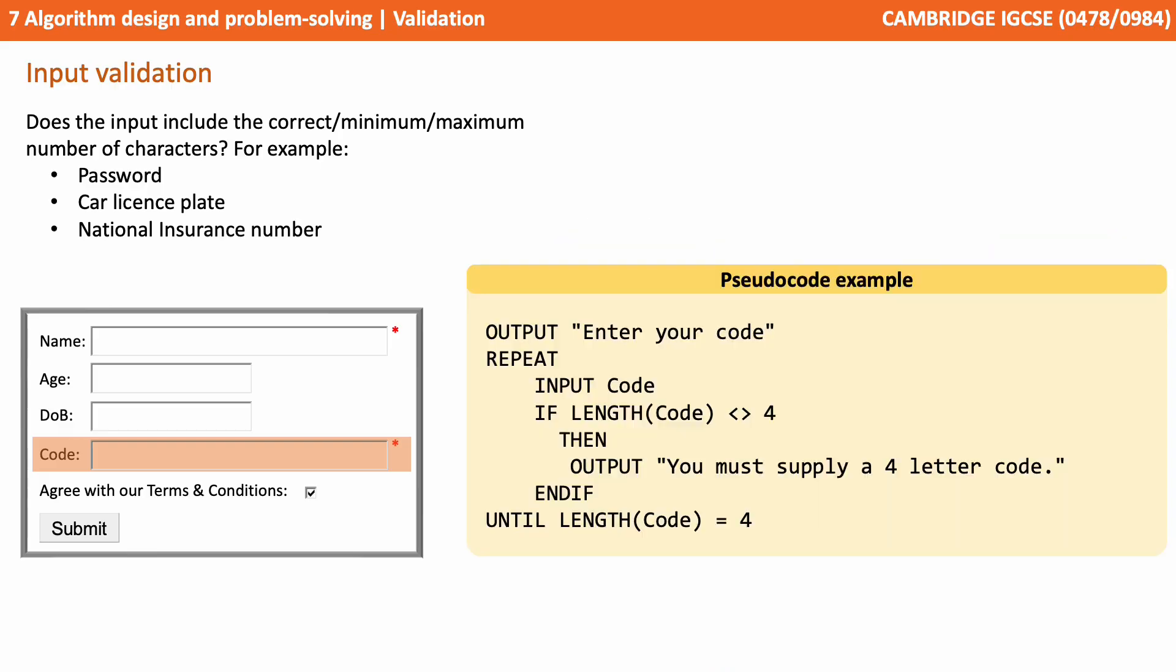So in our example here, we're expecting the user to type in a four-letter code. We ask them to enter the code, and then we check the length of the inputted variable to see if it's equal to four. And if it's not, we tell them they must supply a four-letter code, and we keep asking them that in the repeat loop until eventually the length of the field they've entered is four characters.